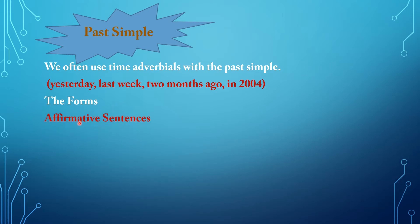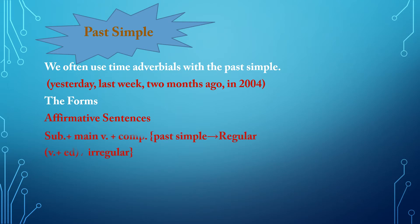We come to the first type of sentences, which is the affirmative sentences. You have to begin your sentence by putting the subject, followed by the main verb — the past simple — either regular (verb plus -ed) or irregular, or verb to be: was or were.